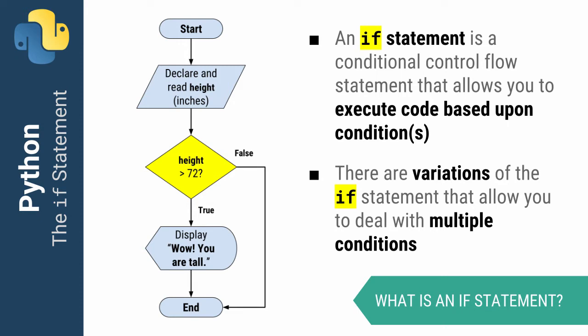The if statement is probably the most popular control flow statement in nearly every language. It allows you to execute code based upon a condition evaluated to true. If you need more than one condition to be checked, there are variations of the statement and I'll show you what that looks like as well.